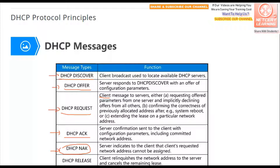The DHCP Release message is used when the client — for example, your PC — is shut down and the IP address will no longer be used. You can release this IP address so the DHCP server can get it back and assign it to another device.